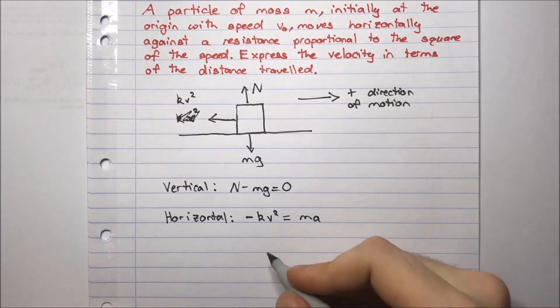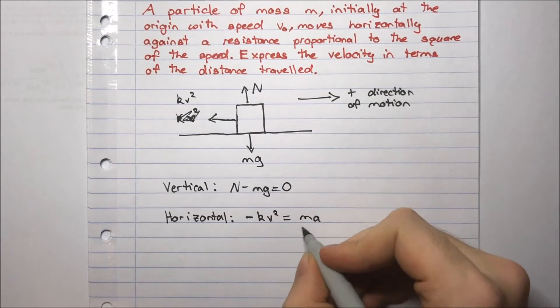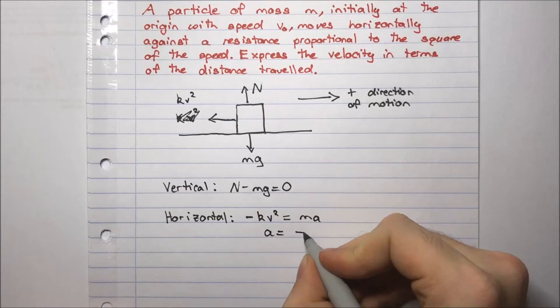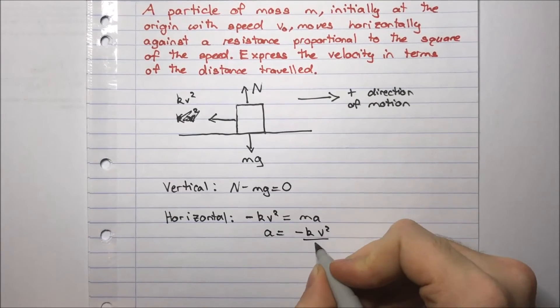Great, so let's rearrange for a. a equals minus kv squared over m.